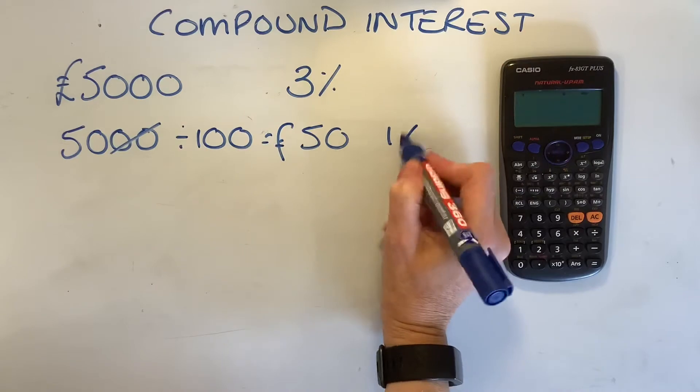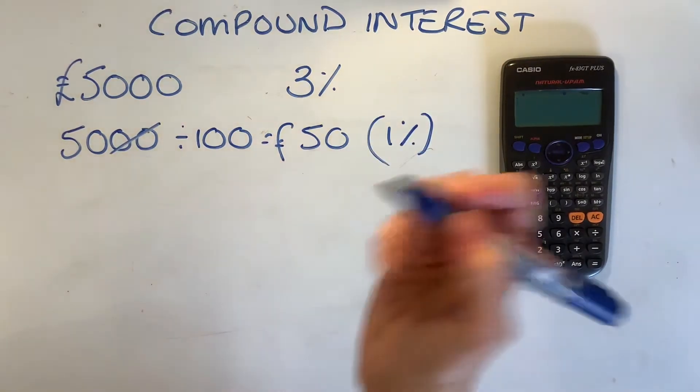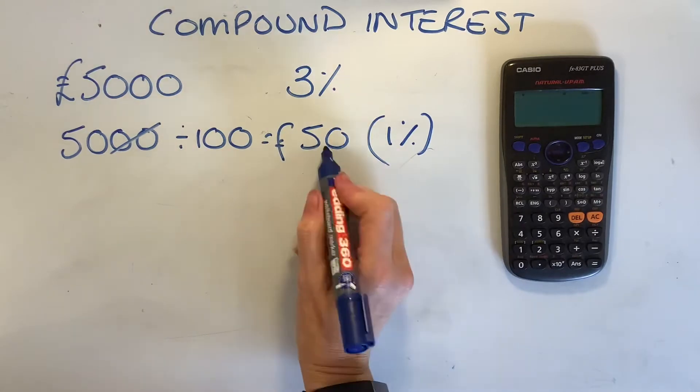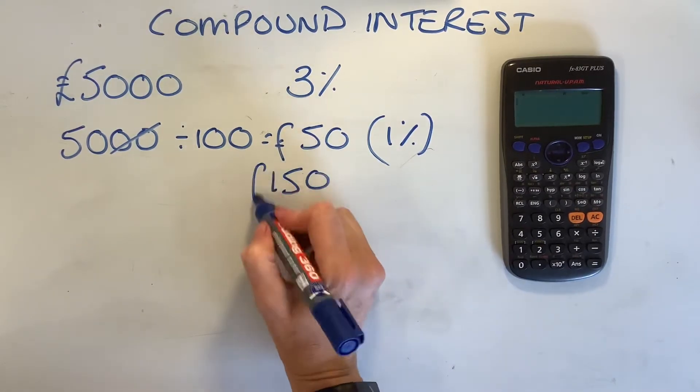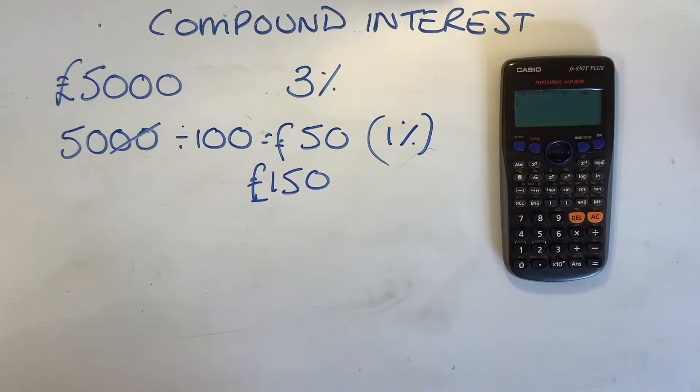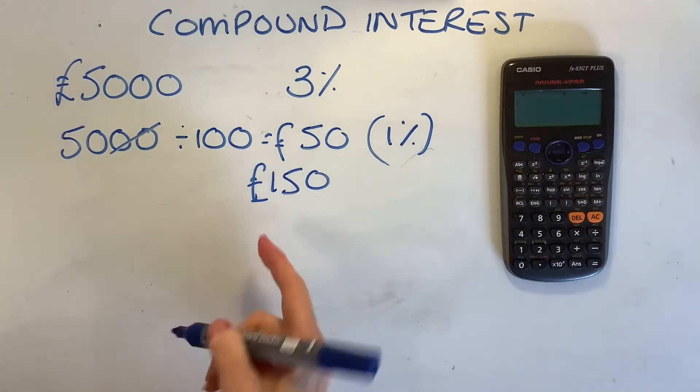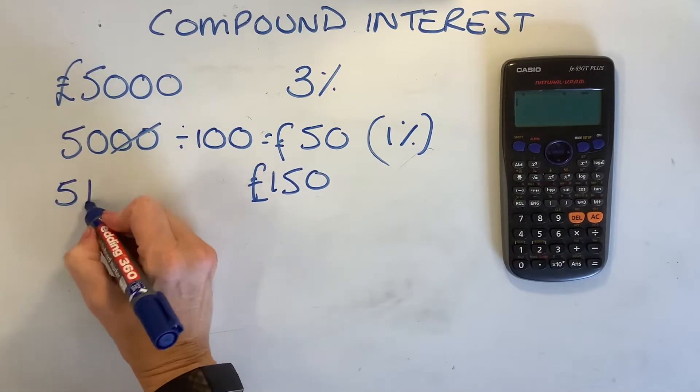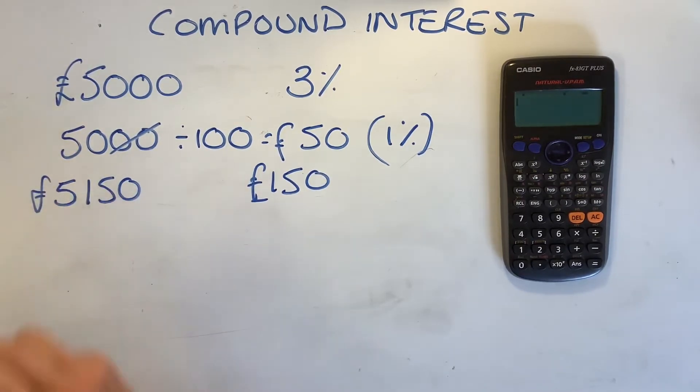This gives us 1%. I'll put that in brackets. We want 3% times it by three. You can just do that. Three fifties are £150. After one year, your interest that you would add on would be £150. You'd end up with £5,150. Pound sign. Very important in functional skills, isn't it?